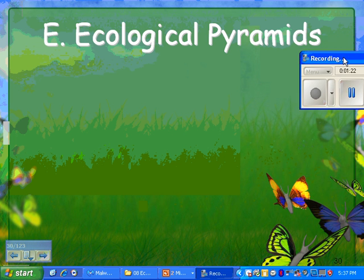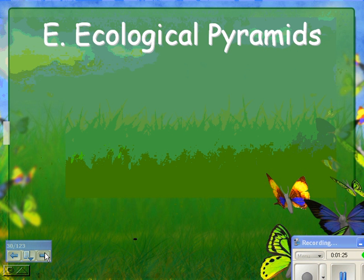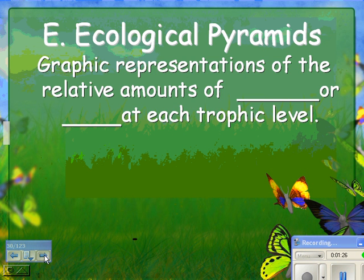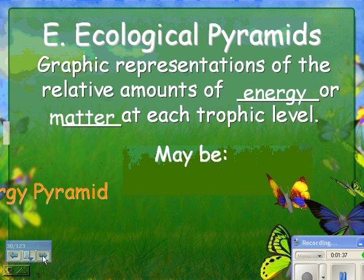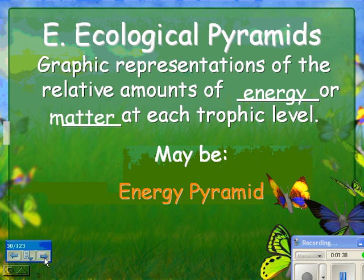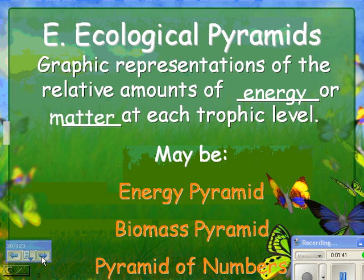We usually represent trophic levels in ecological pyramids. There are three types: an ecological pyramid is a representation of the relative amount of energy, or sometimes matter, at each trophic level. There can be energy pyramids, biomass pyramids, or pyramids of numbers, and I'm going to show you examples of all three.